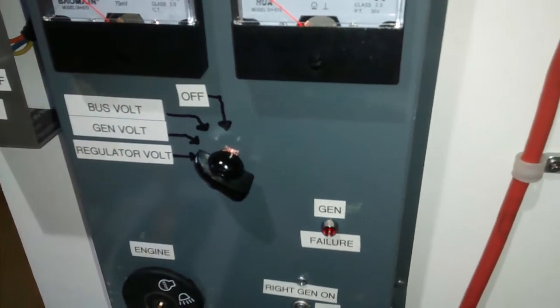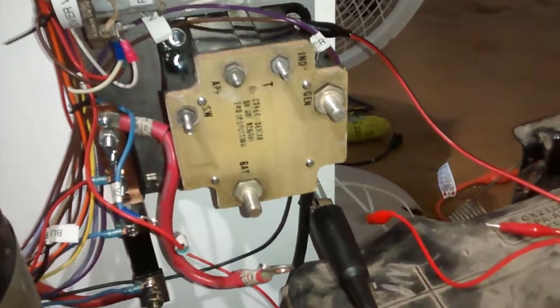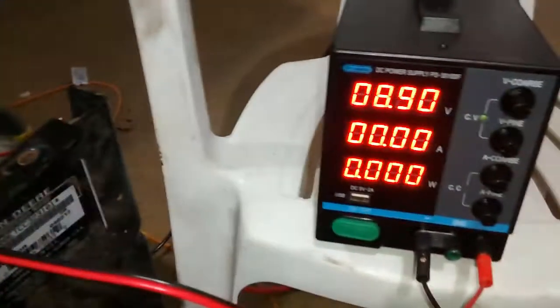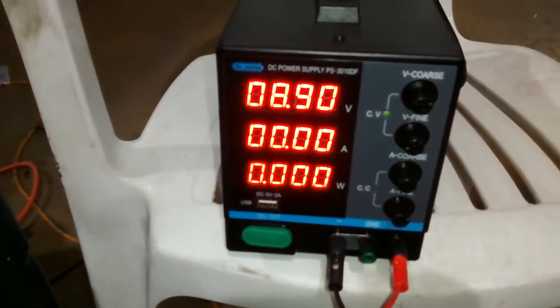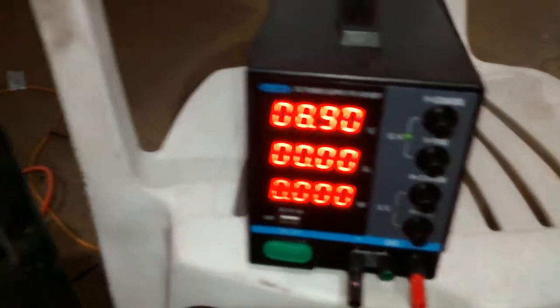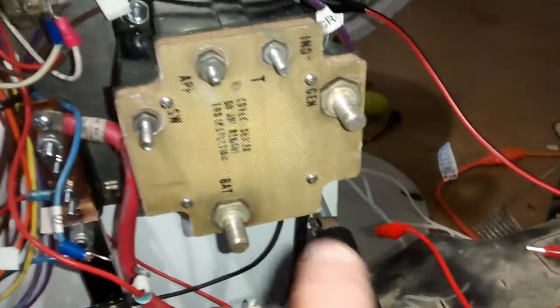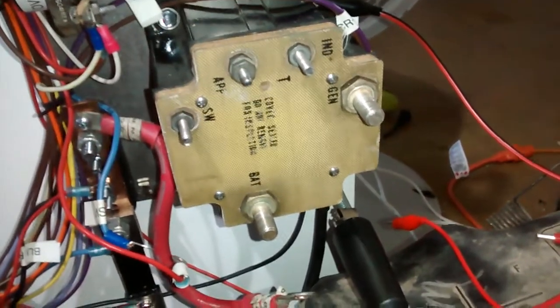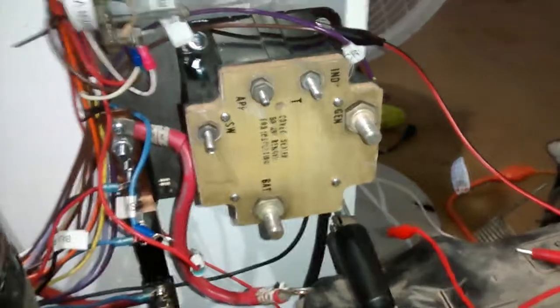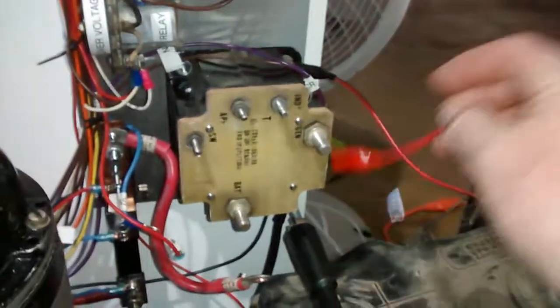So for bench testing this reverse current relay, we're using a zero to 30 volt variable power supply. You don't have to use it - you could use the batteries in the plane because all you're doing is applying 24 volts to the generator terminal, and then after the relay is enacted, we're making sure that we're reading that voltage down at the battery terminal. So here we go with our test. Doing all of this with a simple little jumper wire with alligator clips on each end, and we're using our power supply over here.